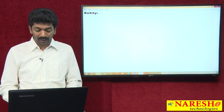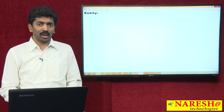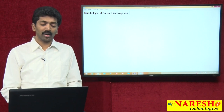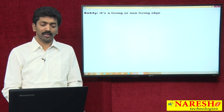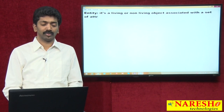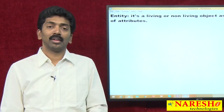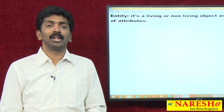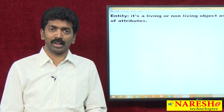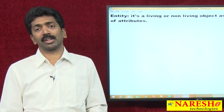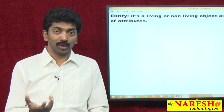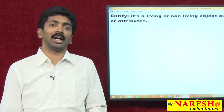Talking about what an entity is — it is a living or non-living object associated with a set of attributes. Can we call a phone as an entity? Yes, we can. It is not a living object, but it can be called an entity because it has some attributes. What are the attributes? The company who manufactured the phone, the model number, the price, the size, the weight, the screen width, and the features — all these things can be considered as attributes.